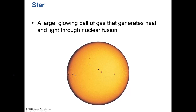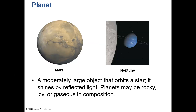Our source of life on earth is the Sun. The Sun is a star — a large glowing ball of gas that generates heat and light through nuclear fusion in its core. The surface temperature of the Sun is about 11,000 degrees Fahrenheit, but inside the core it can be as high as 20 million degrees. Planets are moderately large objects that orbit a star, shine by reflected light, and may be rocky like Earth, icy like Neptune, or gaseous in composition like Jupiter.